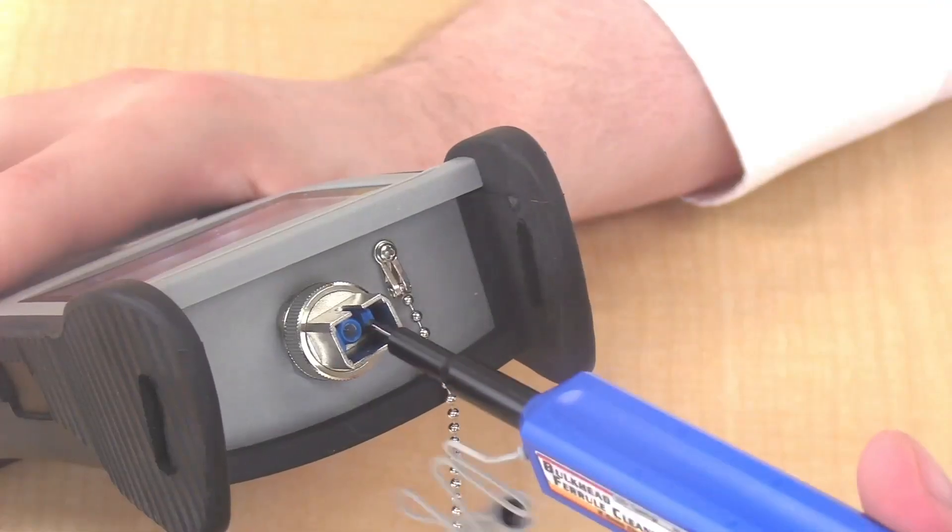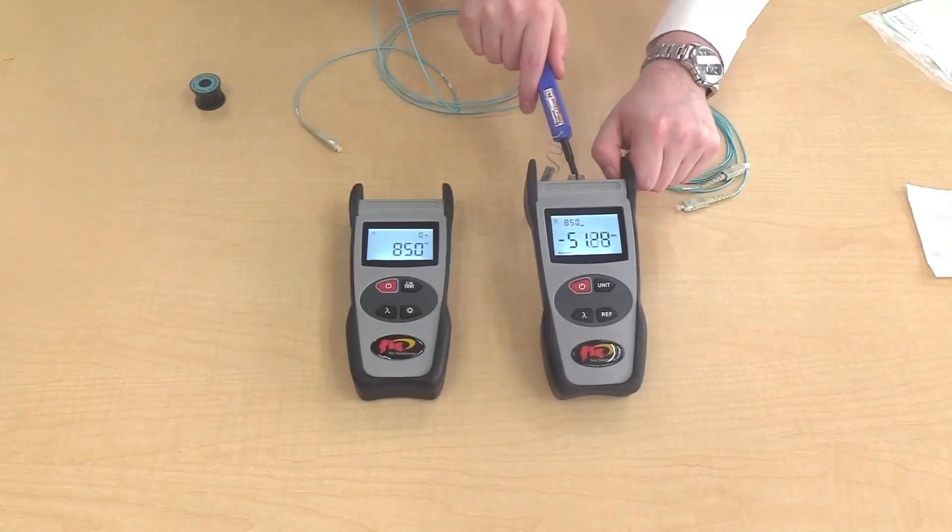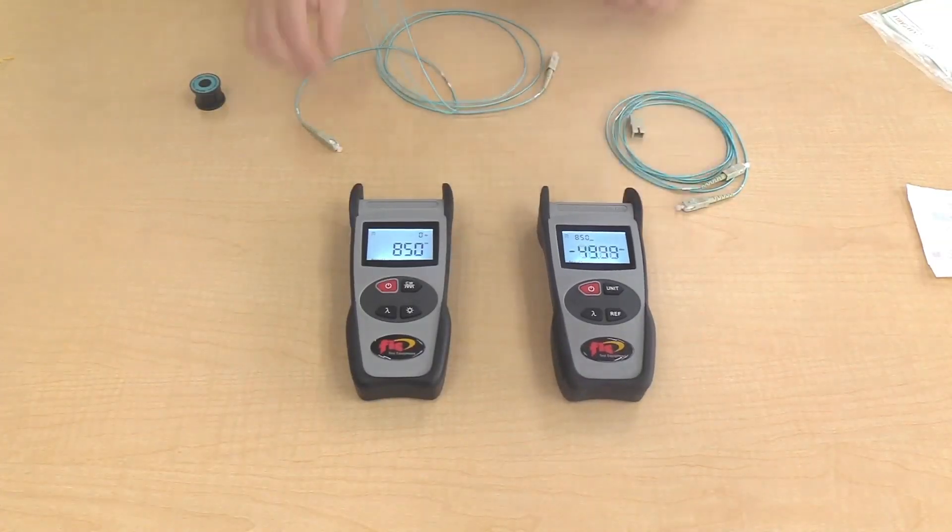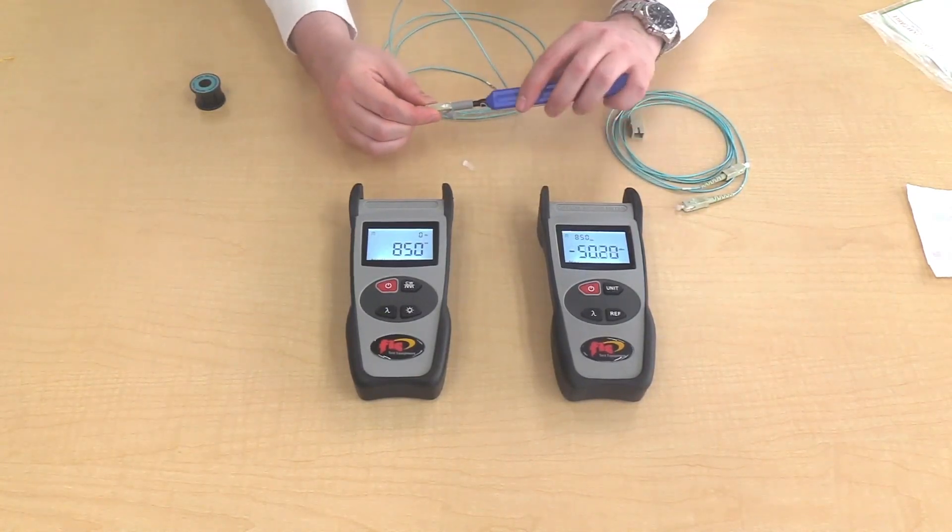First thing you need to do is clean the ports of the light source and power meter. Next, clean the connectors on the reference cord and plug it into the light source and power meter.